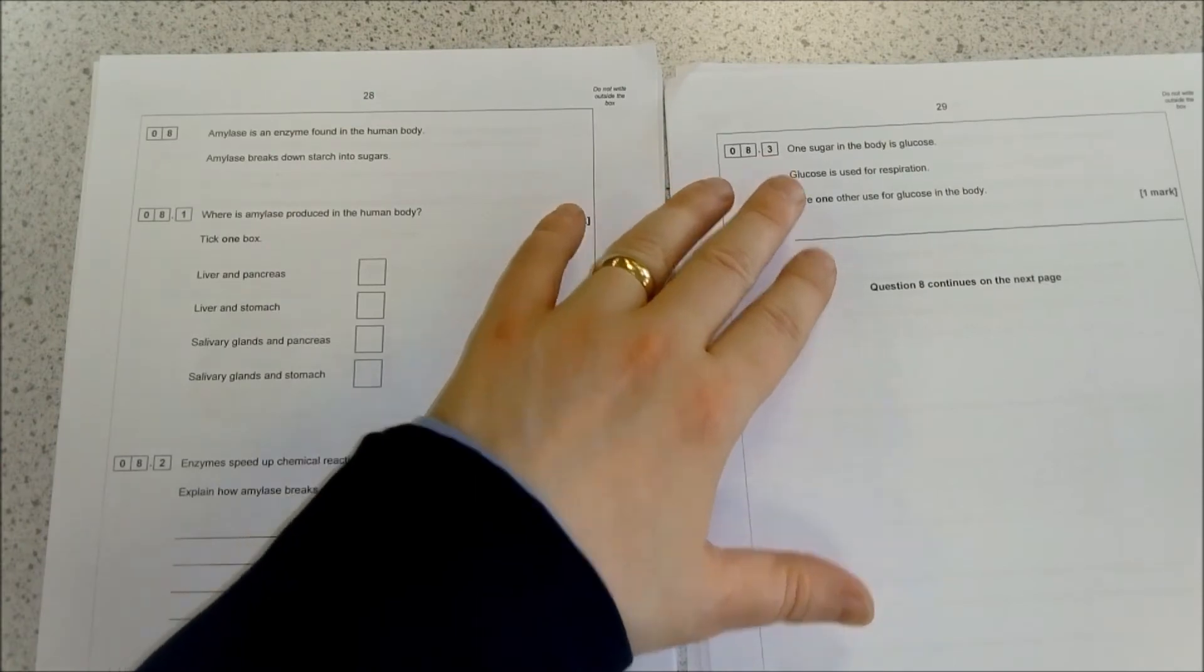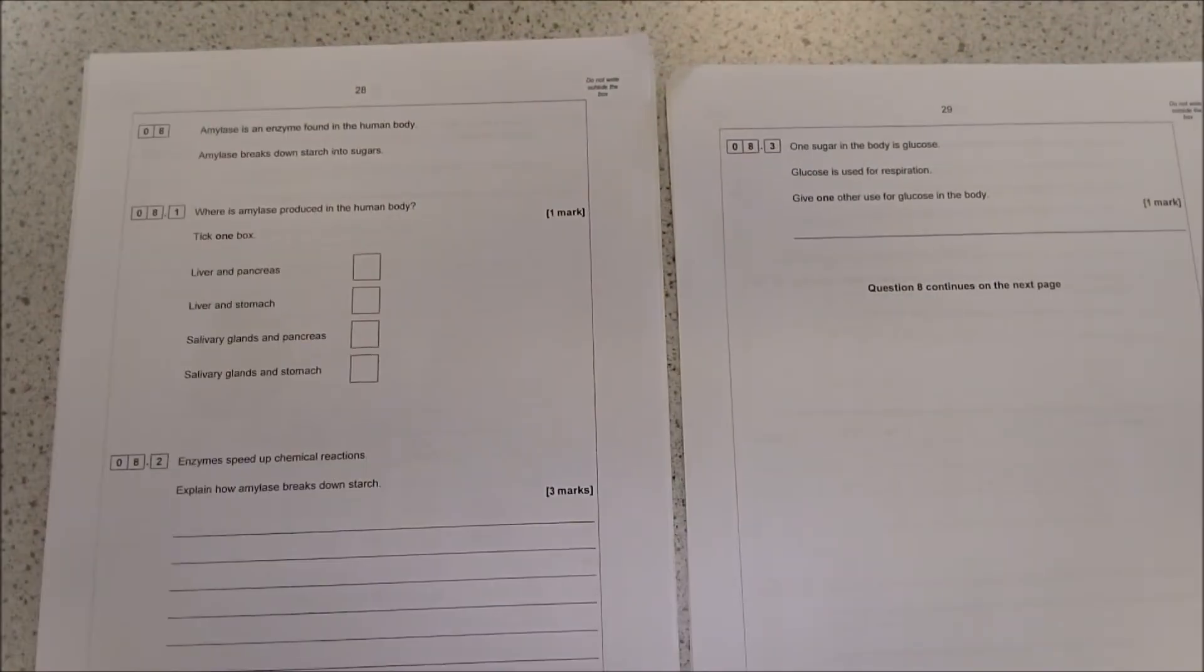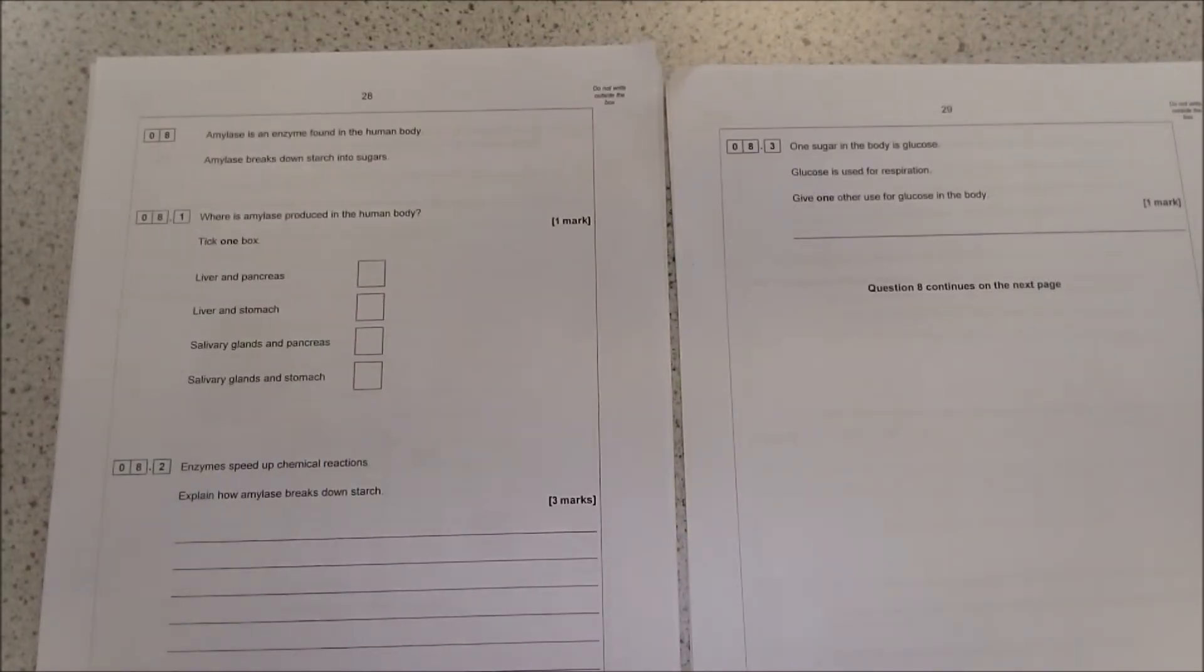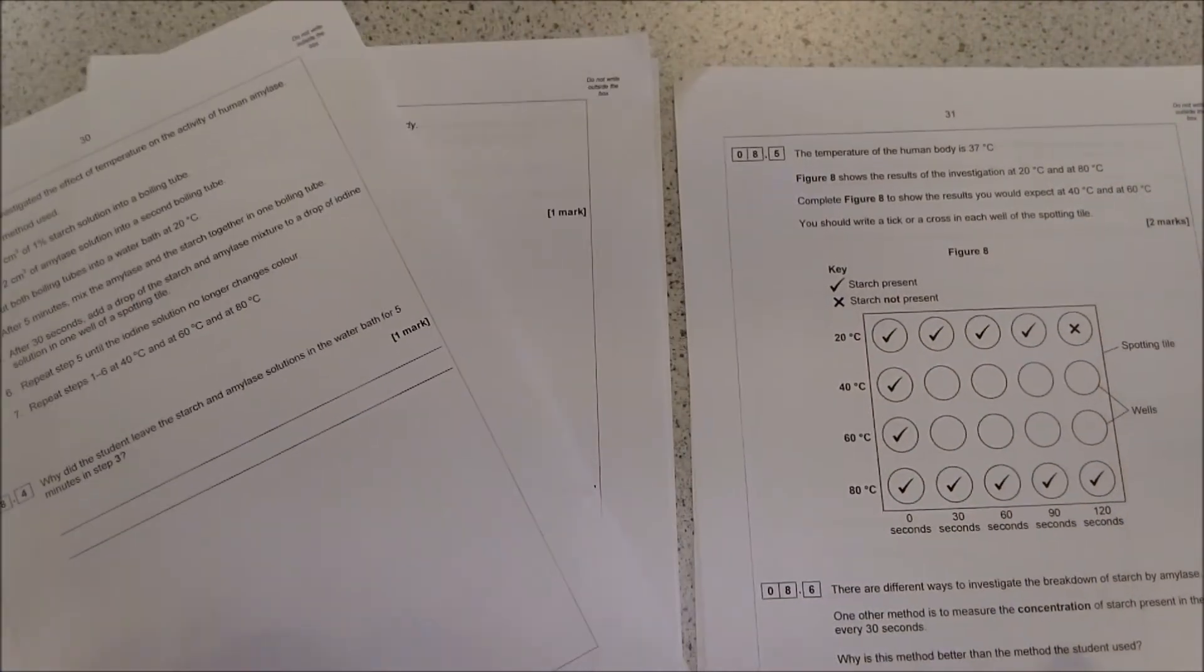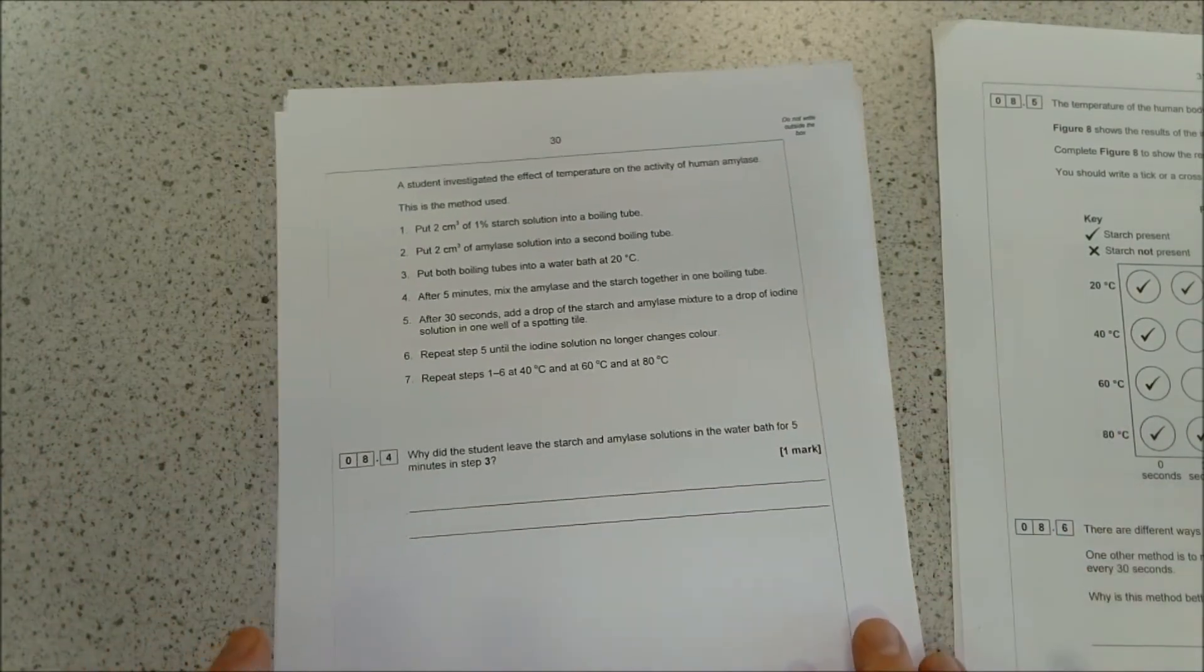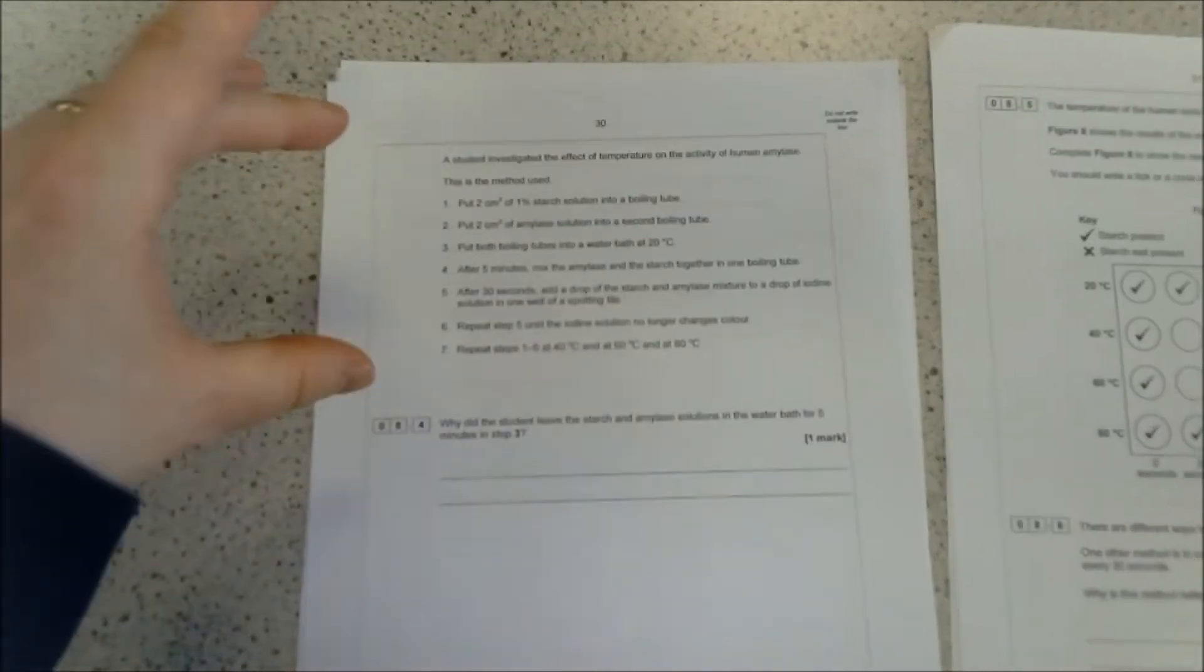Once glucose is in the body, it can be used in respiration. Give one other use of glucose by the body. Well, it can be used to build other molecules, so it can be used to make fat molecules or anything like that.